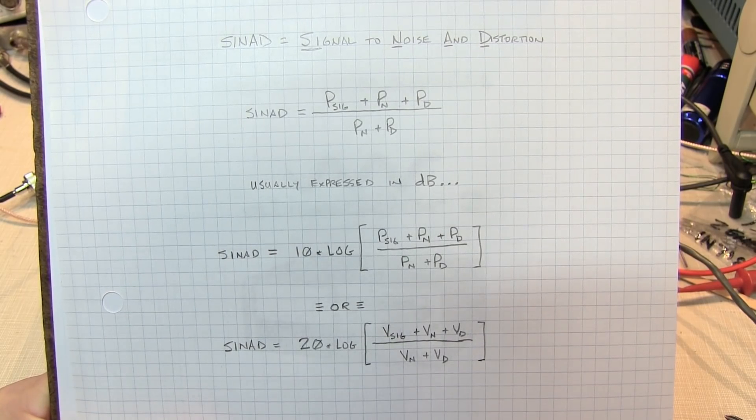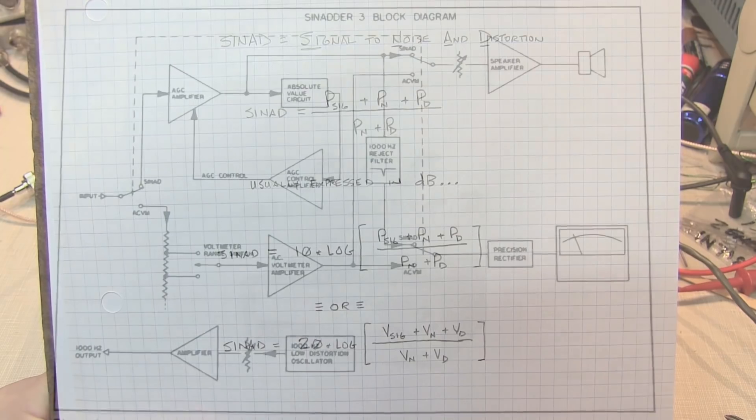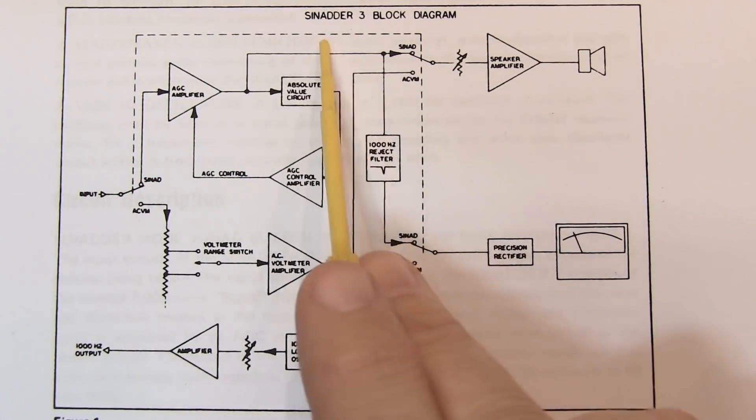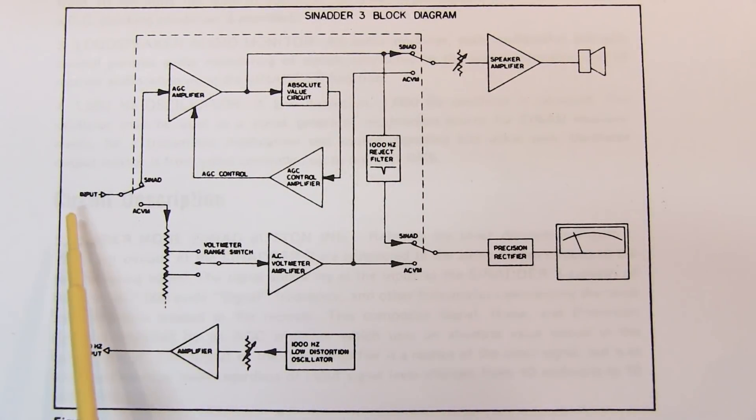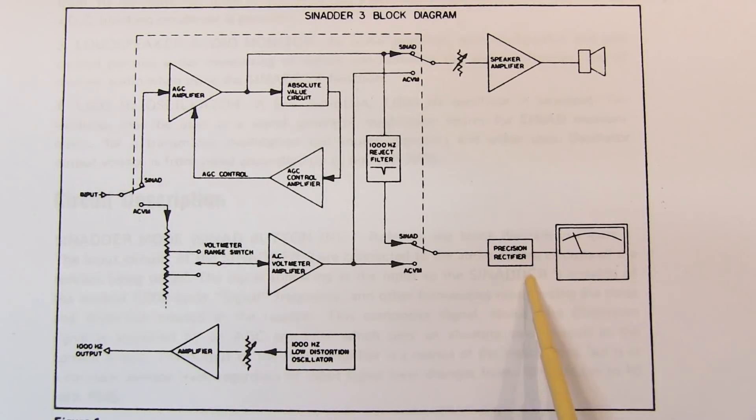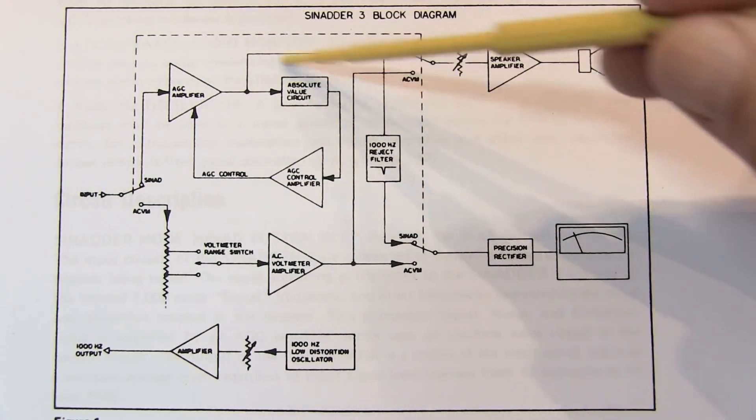Let's take a look at how the SINAD actually measures SINAD. So this is the block diagram for the SINAD-R3. The AC voltmeter function is simply right here. We've got a voltage divider going into an AC voltmeter amplifier, which then goes into a precision rectifier to drive the meter. Quite simple. The low distortion audio oscillator is shown down here. And the SINAD measurement path is this section up here.